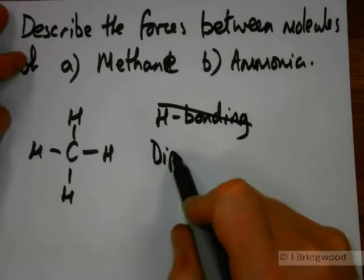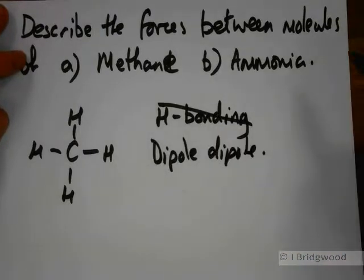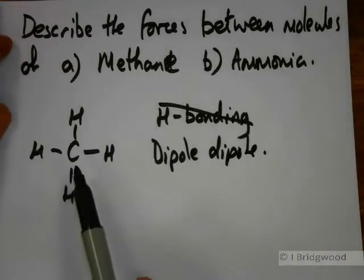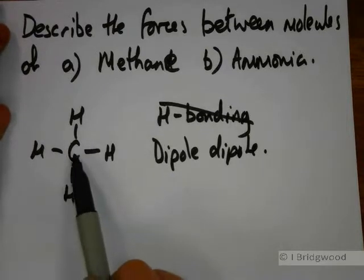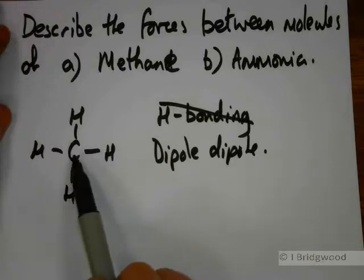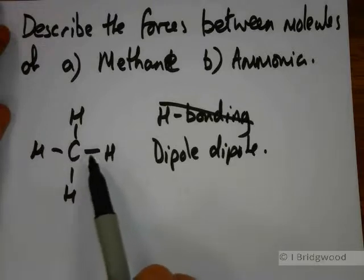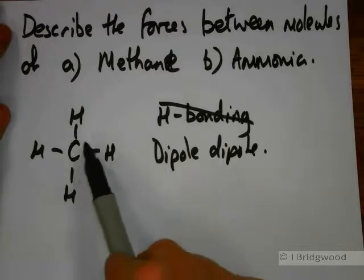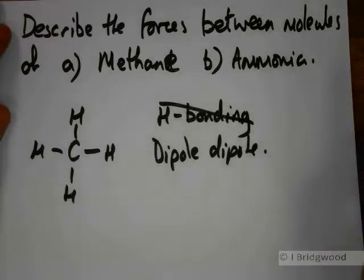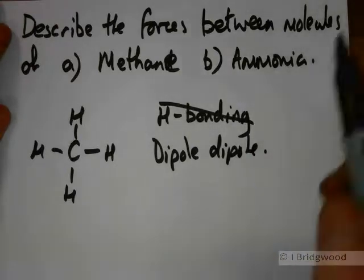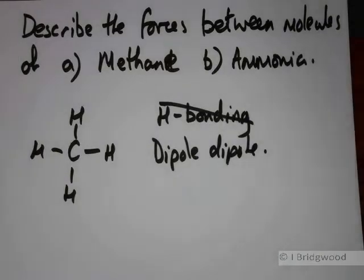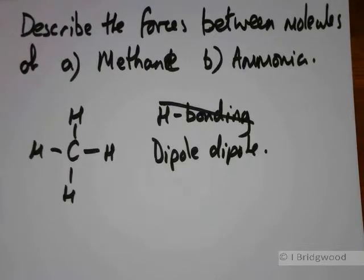Next one is dipole-dipole. For that, we've got to have a polar molecule. Do we have a polar molecule? Well, no, we don't, for two reasons. Firstly, we have very little electronegativity difference between carbon and hydrogen. So therefore, we don't have any polar bonds. And secondly, it's a symmetric molecule. It's tetrahedral around the central carbon. And therefore, it's going to be non-polar. So we don't have any dipole-dipole interactions.